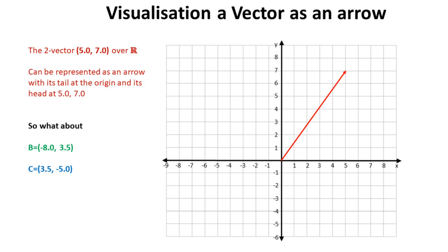So what about (-8, 3.5)? So this should be nice and easy. Minus 8 would come back to here, and 3.5 would come over to here. So hopefully that should be our vector.